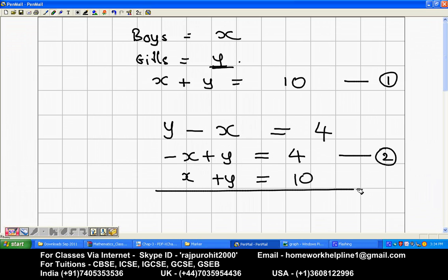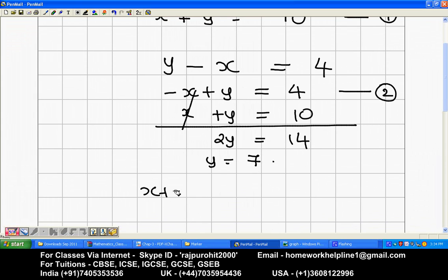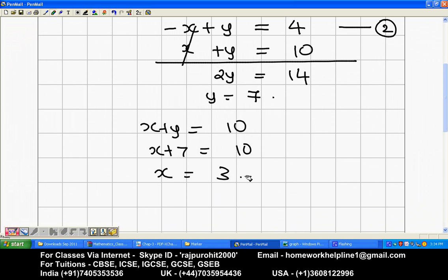Equation number 1 is x plus y is equal to 10. Just add both the equations. 2y is equal to 14, so I get y is equal to 7. If y is 7, x plus y is 10, so x plus 7 is equal to 10. It means x is 3.